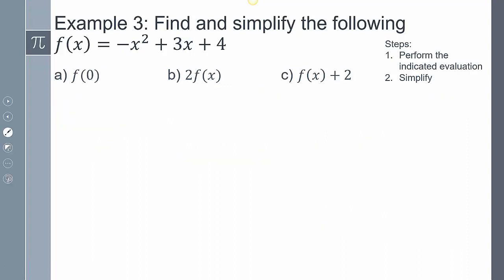Now it doesn't really necessarily matter what that function looks like. We just need to perform the operation of what it's asking me to do. So on this first one, it's just saying plug in 0. So plug in 0, this is 0, this is 0, and this is 4. And so I just get f of 0 equaling 4.